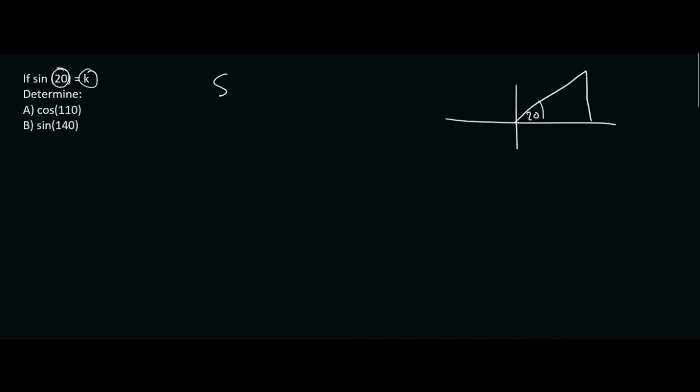And they're telling us that the sin of 20 is k. Now remember, we can think of k as k over 1. And then from SOHCAHTOA, we know that sin is opposite over hypotenuse. So the opposite is k, the hypotenuse is 1. If you had to do Pythagoras, you should get 1 minus k squared over here.